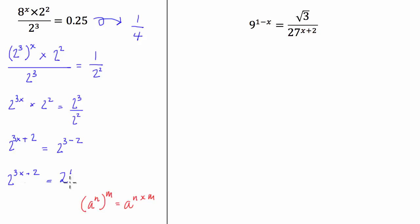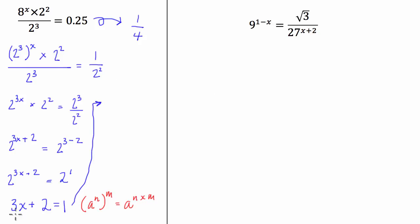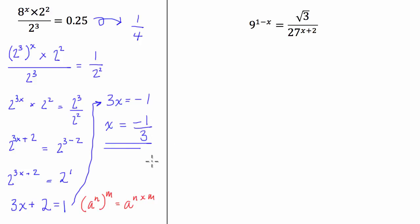Once we get our equation looking like this, I like to tell kids we drop the bass — you can do whatever sound effect you like afterwards — but what that basically means is we have 3x plus 2 equals 1. It doesn't take a rocket scientist from here: we just take the 2 over the other side by subtracting 2, and we're left with 3x equals minus 1. Then we divide both sides by 3 to finish up with x equals negative 1 over 3. And that, for the first one, is our solution.